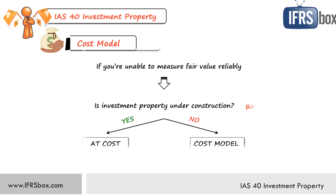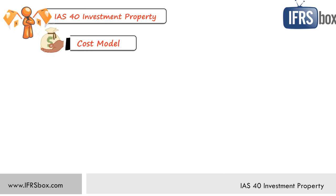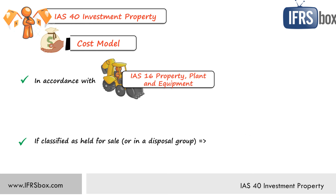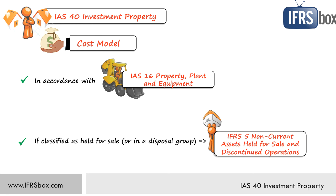The second choice is the cost model, and we will not explain it in detail here because you should refer to IAS 16 Property, Plant and Equipment — IAS 40 refers you there too. If an asset is classified as held for sale or in a disposal group, then you should apply IFRS 5 Non-Current Assets Held for Sale and Discontinued Operations.